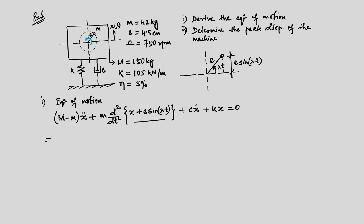Simplifying by expanding the bracket, the small m times x double dot terms cancel. We are left with M x double dot plus c x dot plus k x on the left side. Differentiating the second term twice and moving it to the right-hand side gives m E λ² sin(λt).